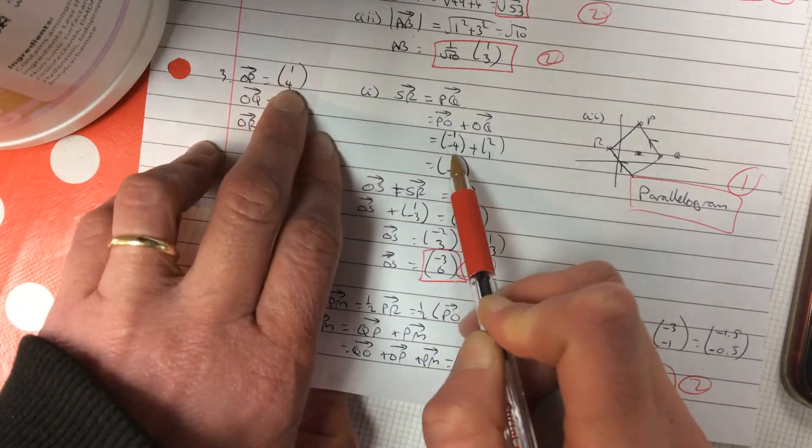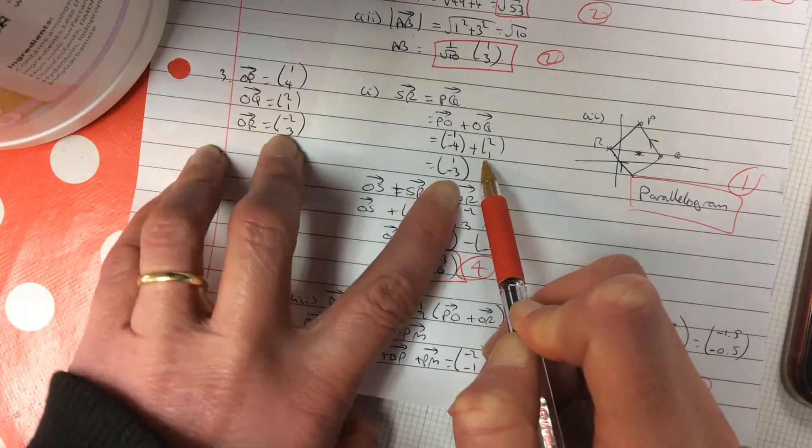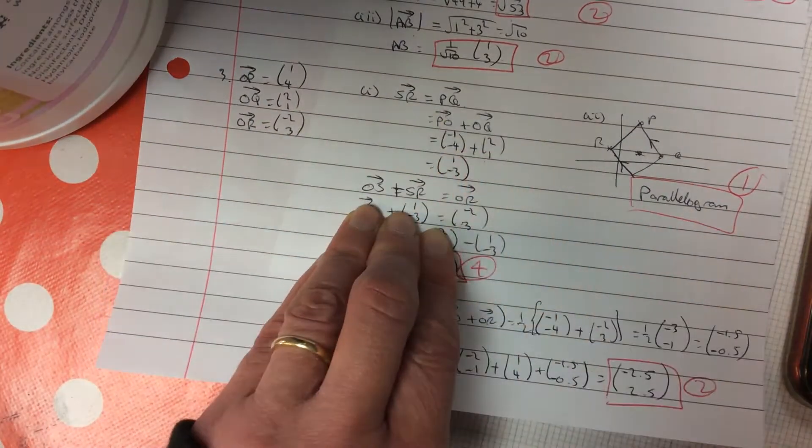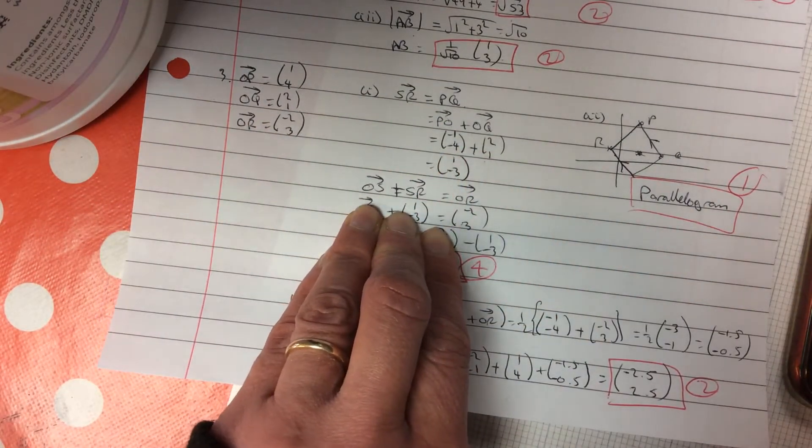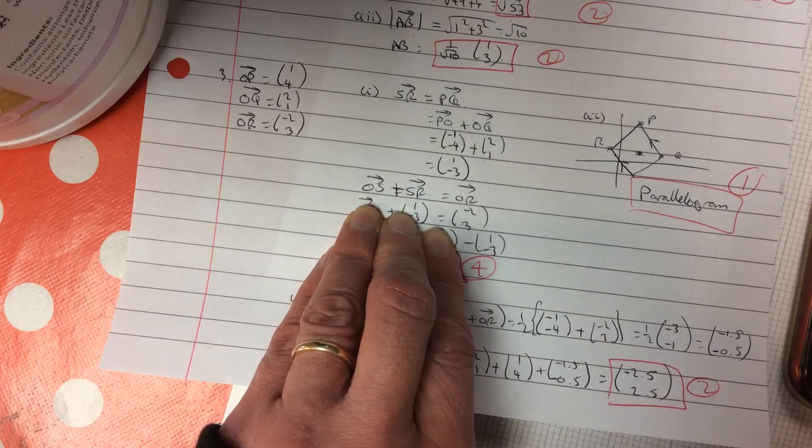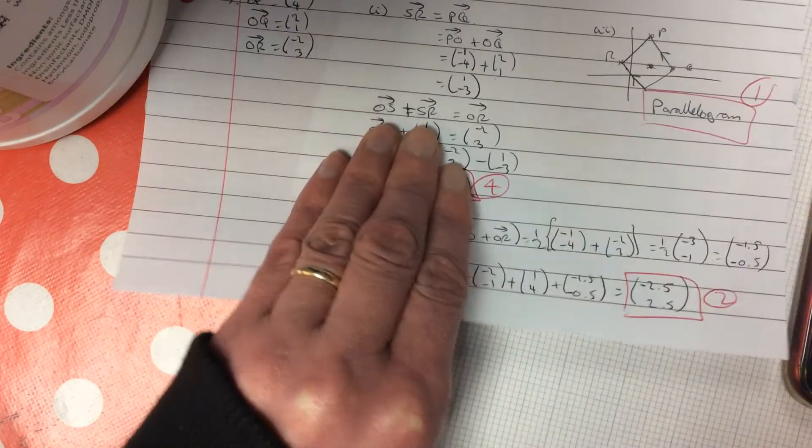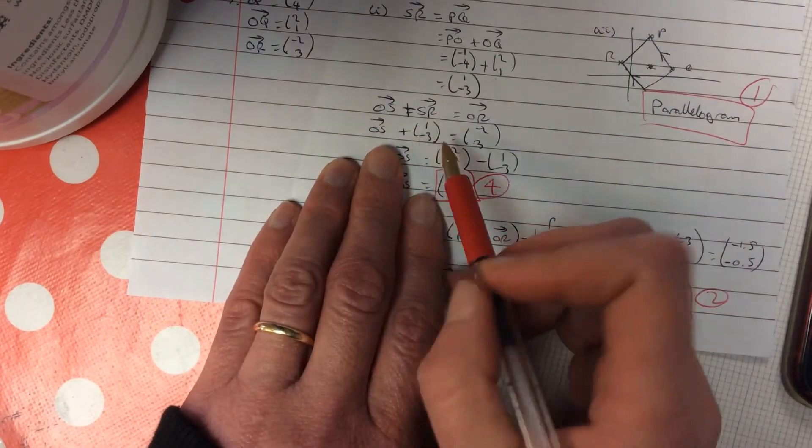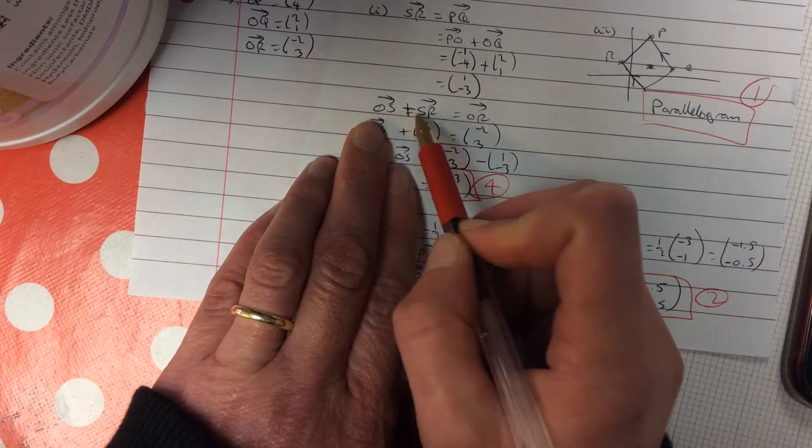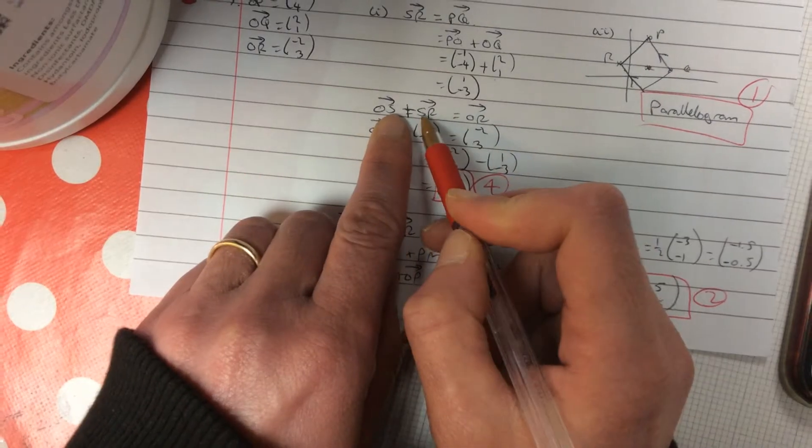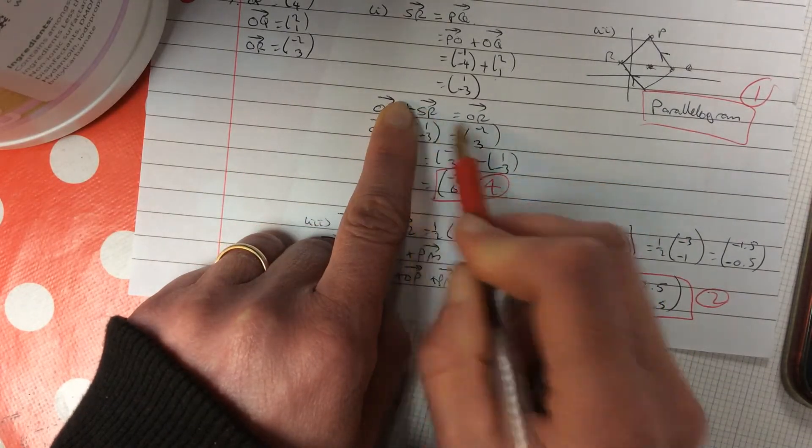PO, do it backwards, minus 1, add 4. There's OQ going forward, so you've got SR. OK, then the next thing, find the coordinates of S. So basically, I need to find the position vector of S. So let's look at this. OS plus SR. If you look, the S is matched up. That's the same as OR.